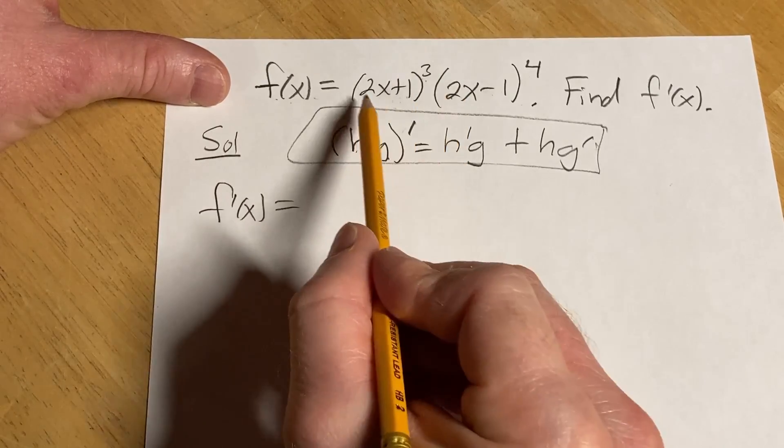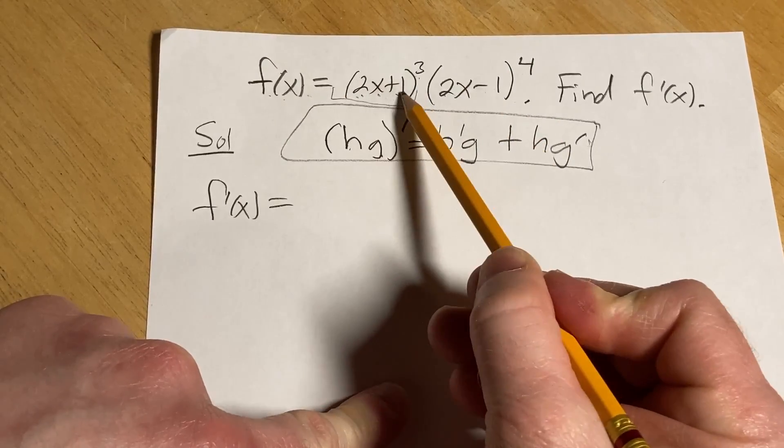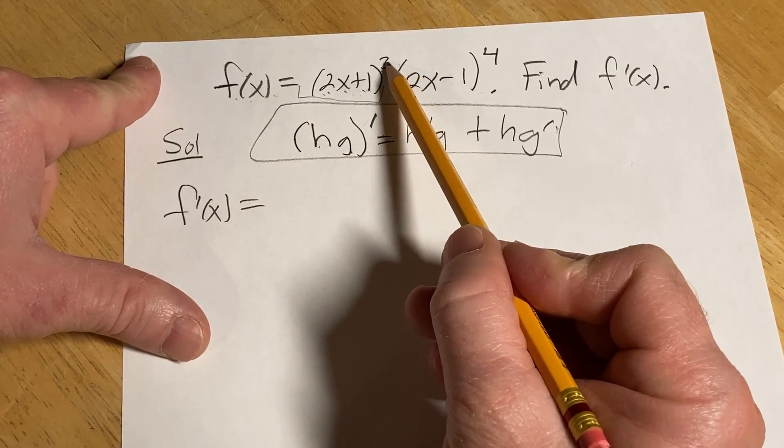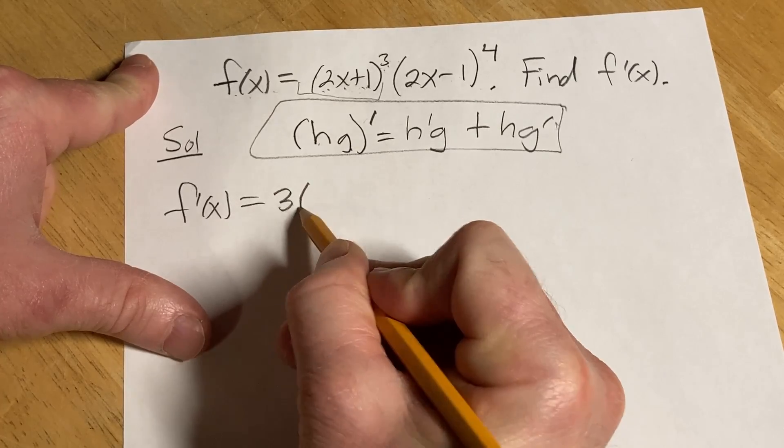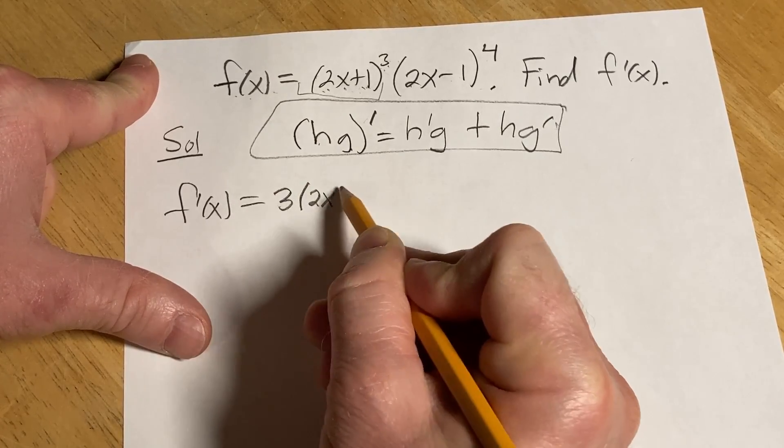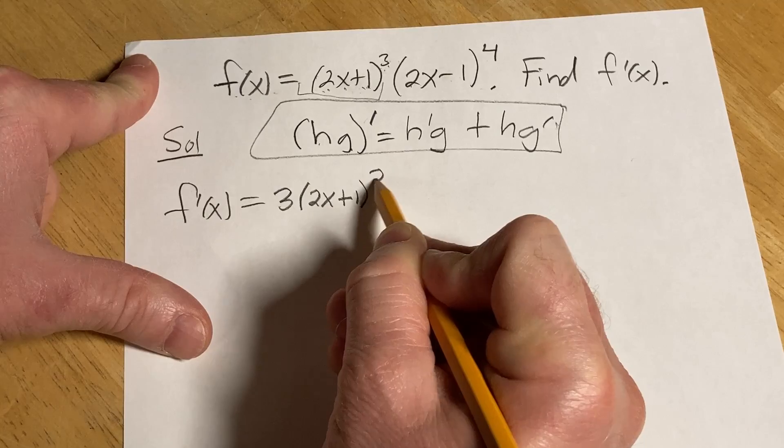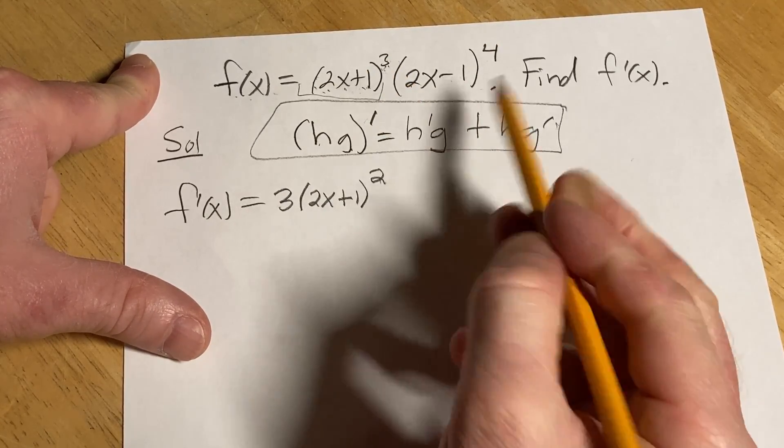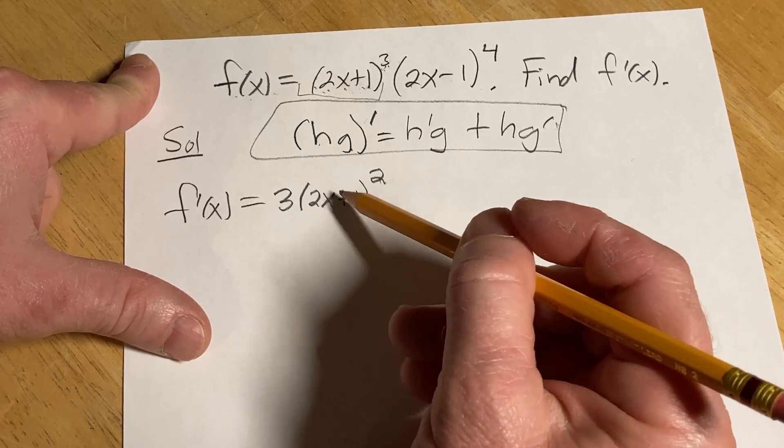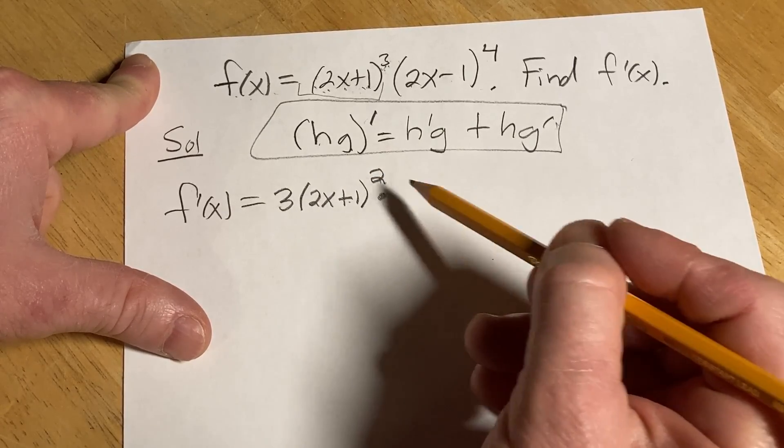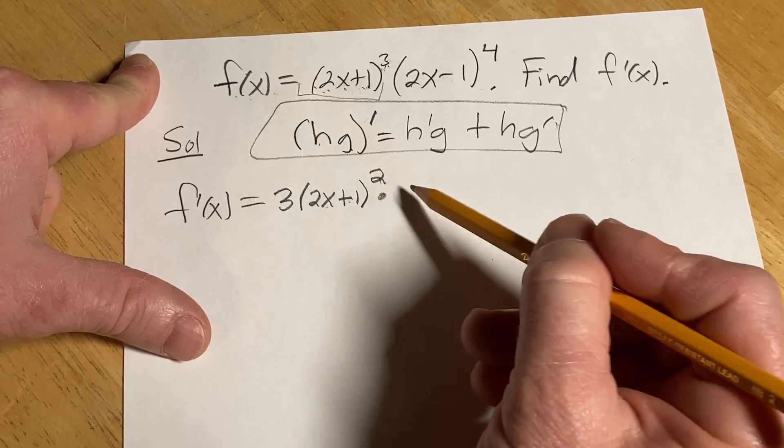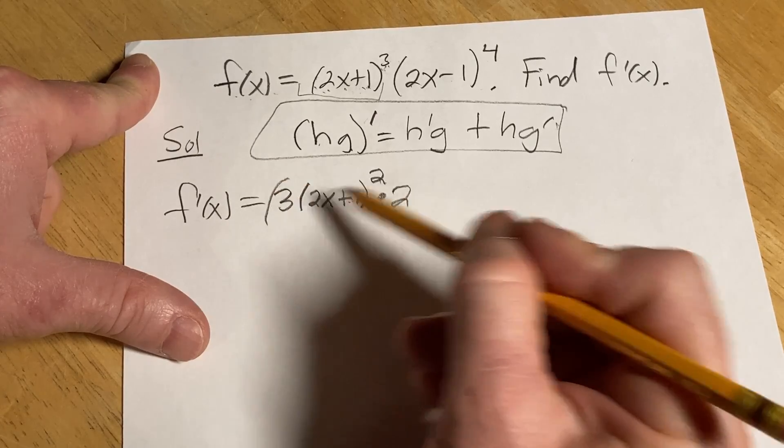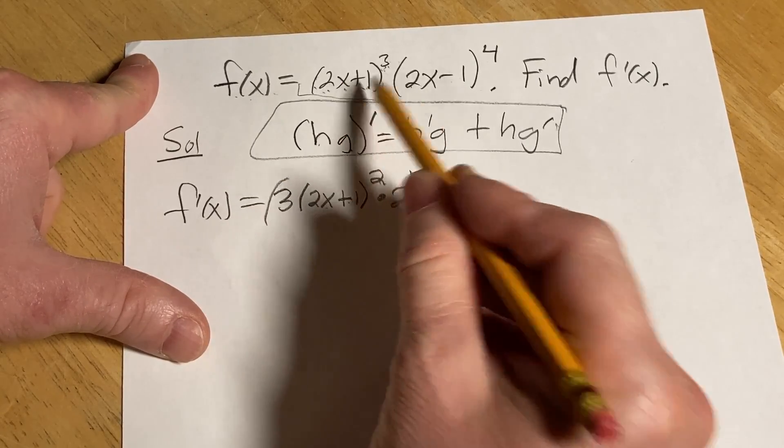We start by taking the derivative of the first. We're focusing on this piece here. This is 2x plus 1 to the third power. So we're going to use the chain rule here. We'll take the derivative of the outside, and we want to leave that evaluated at the inside. So leave the inside function untouched. So all we've done so far is we've brought down the 3 and we subtracted 1 from the exponent. We've essentially taken the derivative of the outside function and left the inside untouched times the derivative of the inside. Well, the derivative of 2x is 2. The derivative of 1 is 0, so I won't write it. So all of this is our h prime. It's the derivative of the first piece.